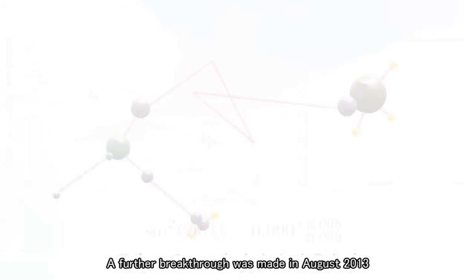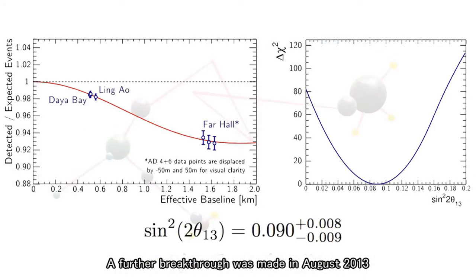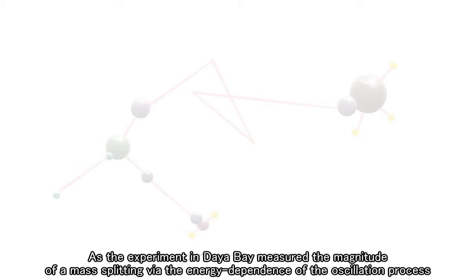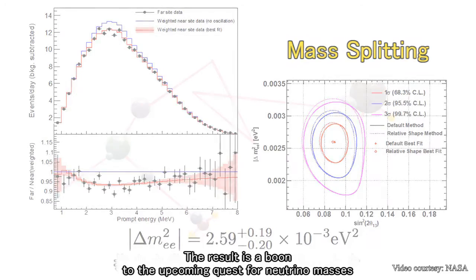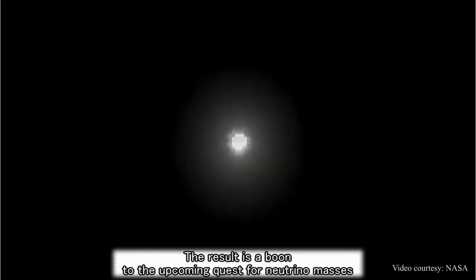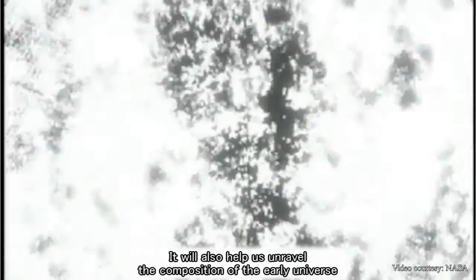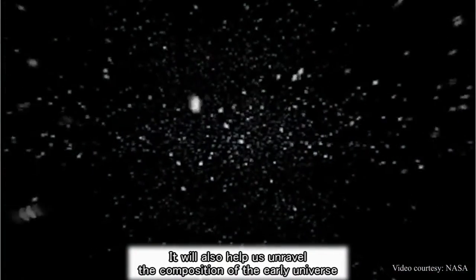A further breakthrough was made in August 2013, as the experiment in Daya Bay measured the magnitude of a mass splitting via the energy dependence of the oscillation process. The result is a boon to the upcoming quest for neutrino masses. It will also help us unravel the composition of the early universe.